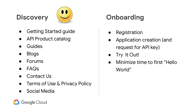Attract developers to your portal by making your API products easy to discover and easy to understand. Ensure that your developers know how to get started with your APIs by providing step-by-step instructions on a getting started page. This will facilitate getting developers familiar with your API catalog and reduce the support effort needed down the road. Consider additional online content such as blogs, forums, and FAQs to quickly turn around answers to developers' questions. Remember to check with your legal department regarding terms of use and privacy policy.